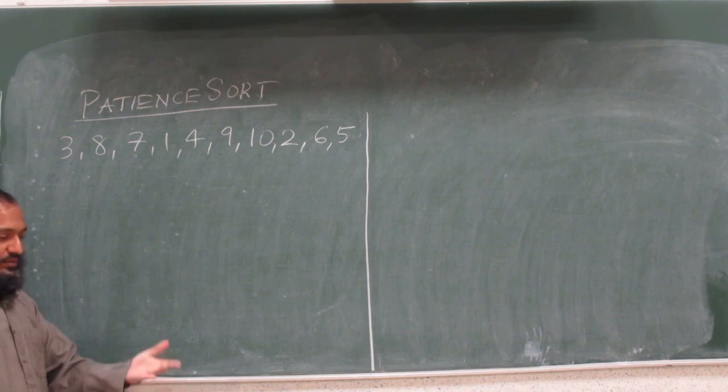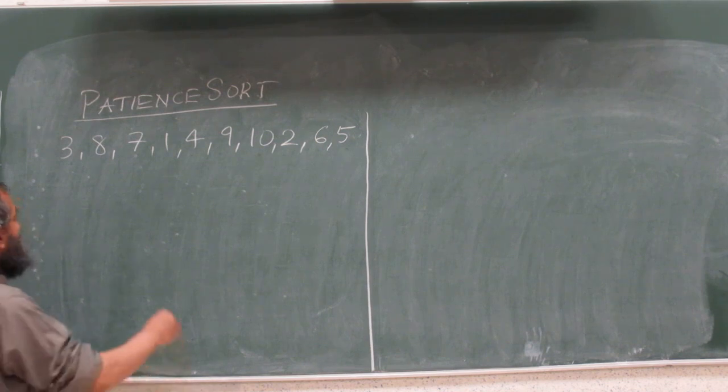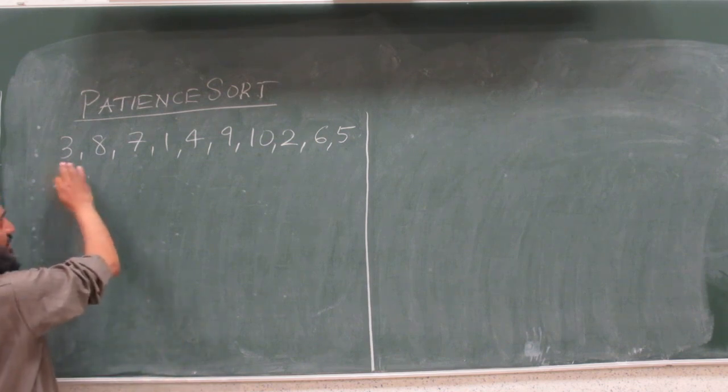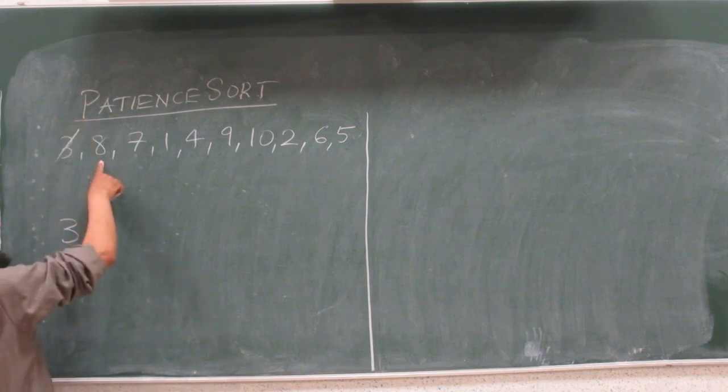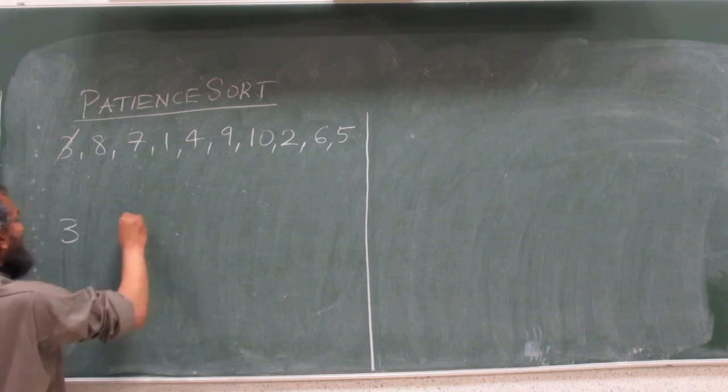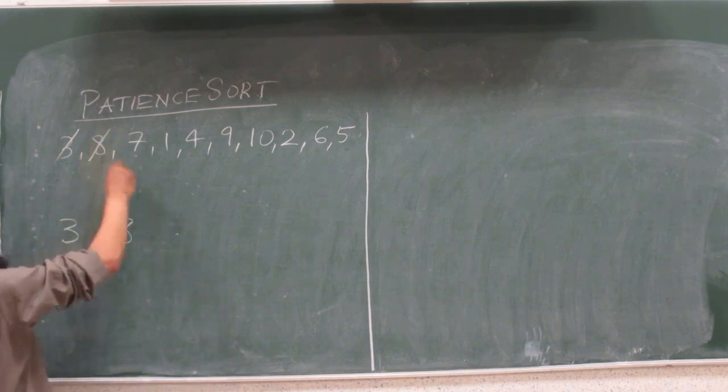Without disturbing the earlier part of the stack, you take three - let's say this is the input array. You take three. So far we got a three. Then we take eight. Eight cannot go on top of three because it is bigger than three, so we have to start a new stack.